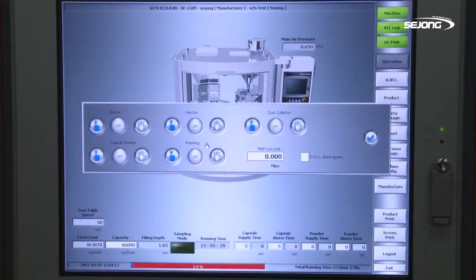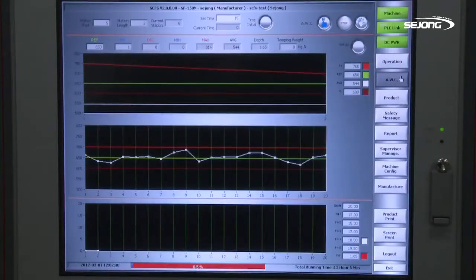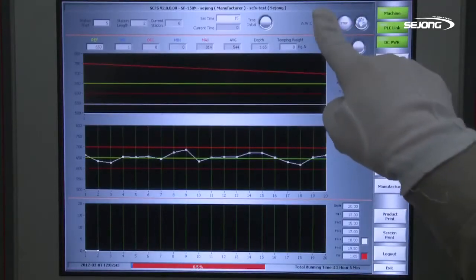Adopting the HMI system as a basic option, it allows you to check all data and working conditions of measured products with the naked eye. You can save all data or print them out with a separate printer.